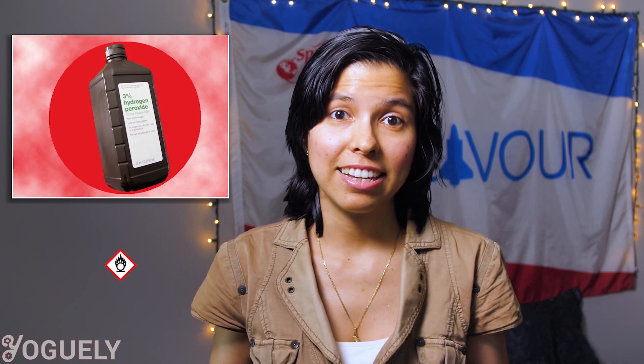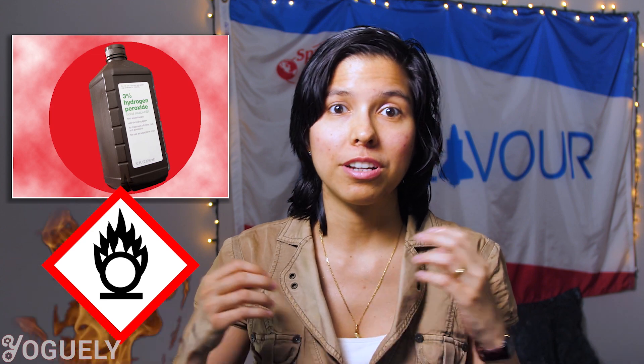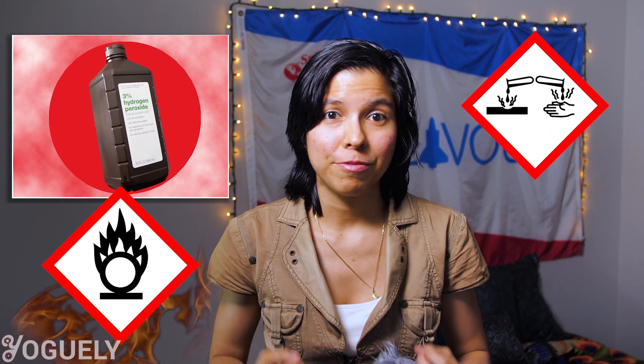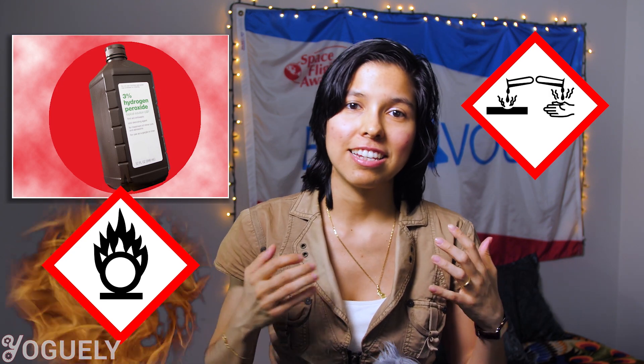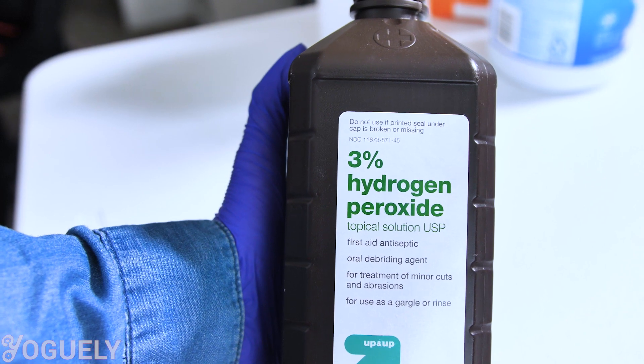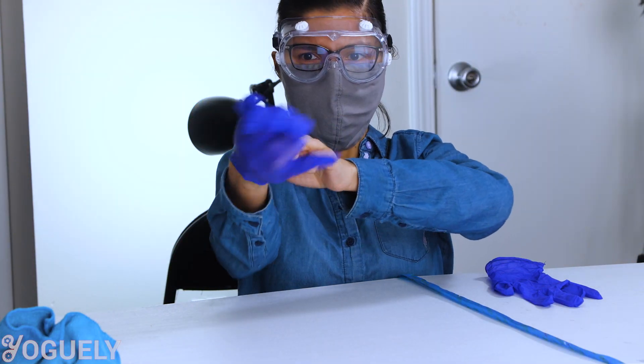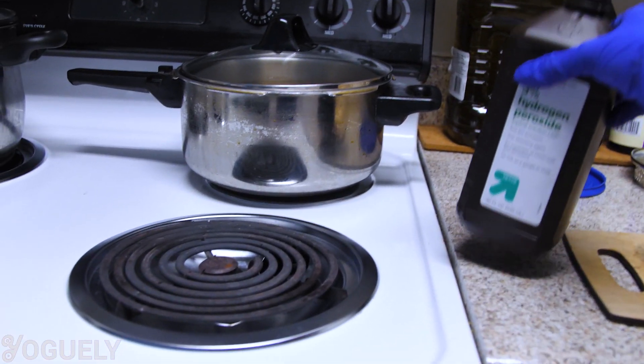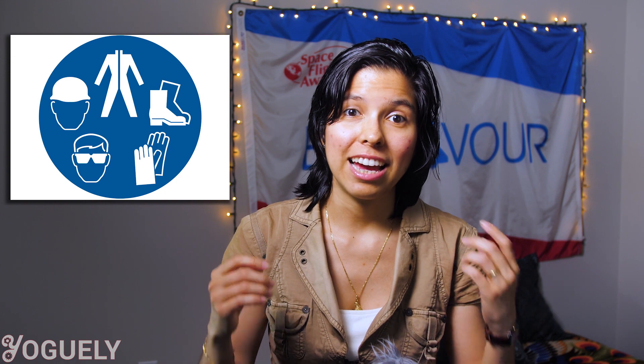Here are some safety measures to take whenever working with hydrogen peroxide, covering the most commonly sold 3% solution. Hydrogen peroxide is a strong oxidizer so it may cause a fire or explosion. It is corrosive, causing severe skin burns and eye damage, and it is an irritant that is harmful if inhaled. When handling it, cover your skin with protective clothing, wear gloves, and use safety goggles or a full face shield. Keep it away from heat and ignition sources. In the event of a spill, have an emergency eye wash and safety shower nearby, and ensure adequate ventilation.